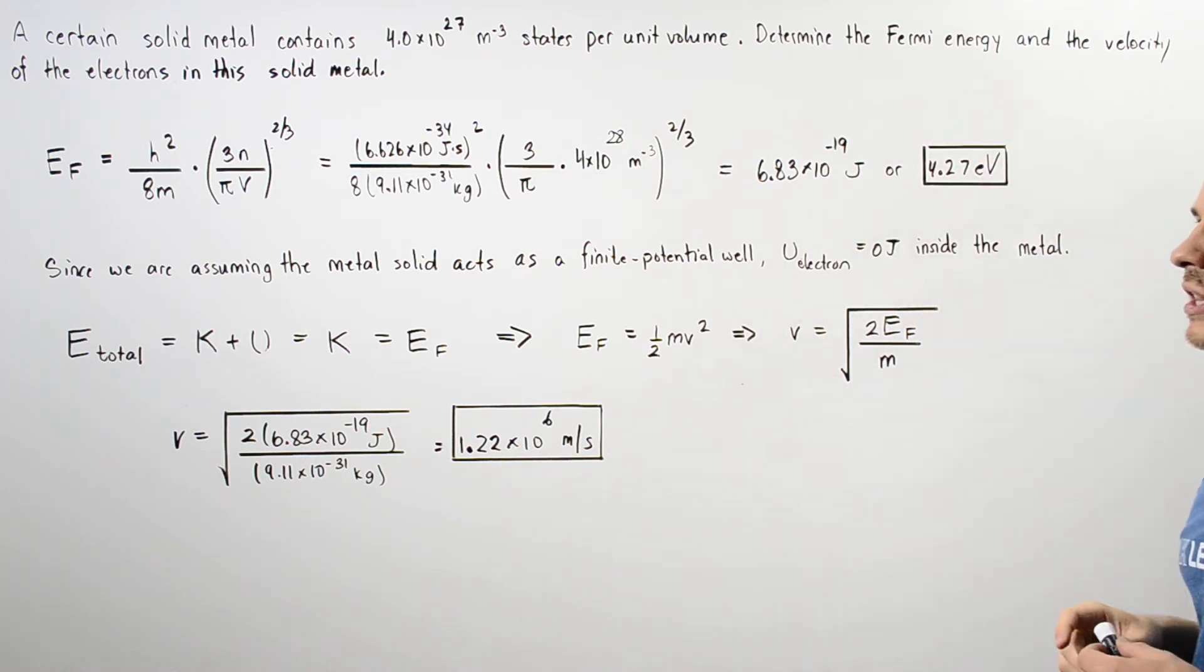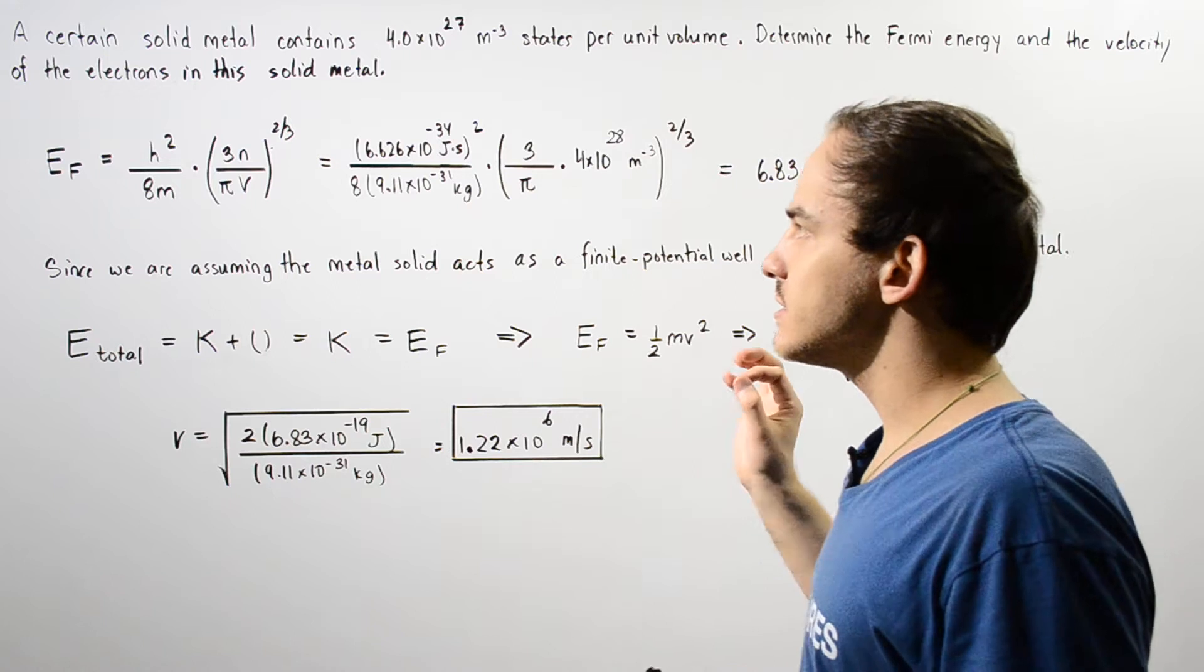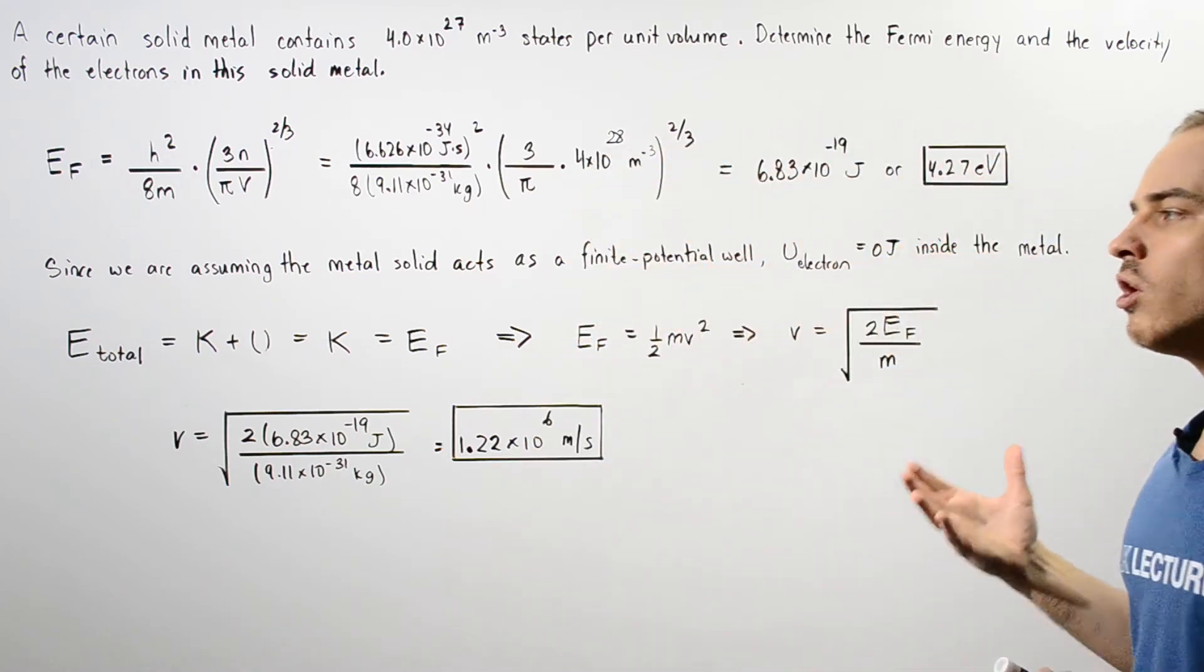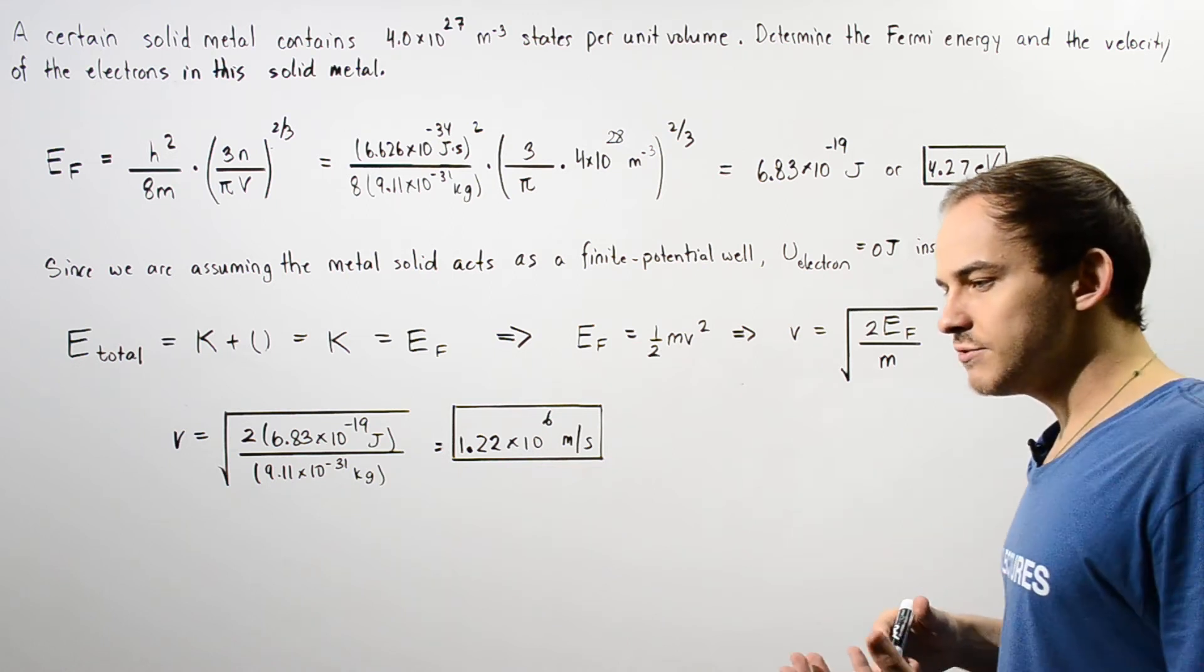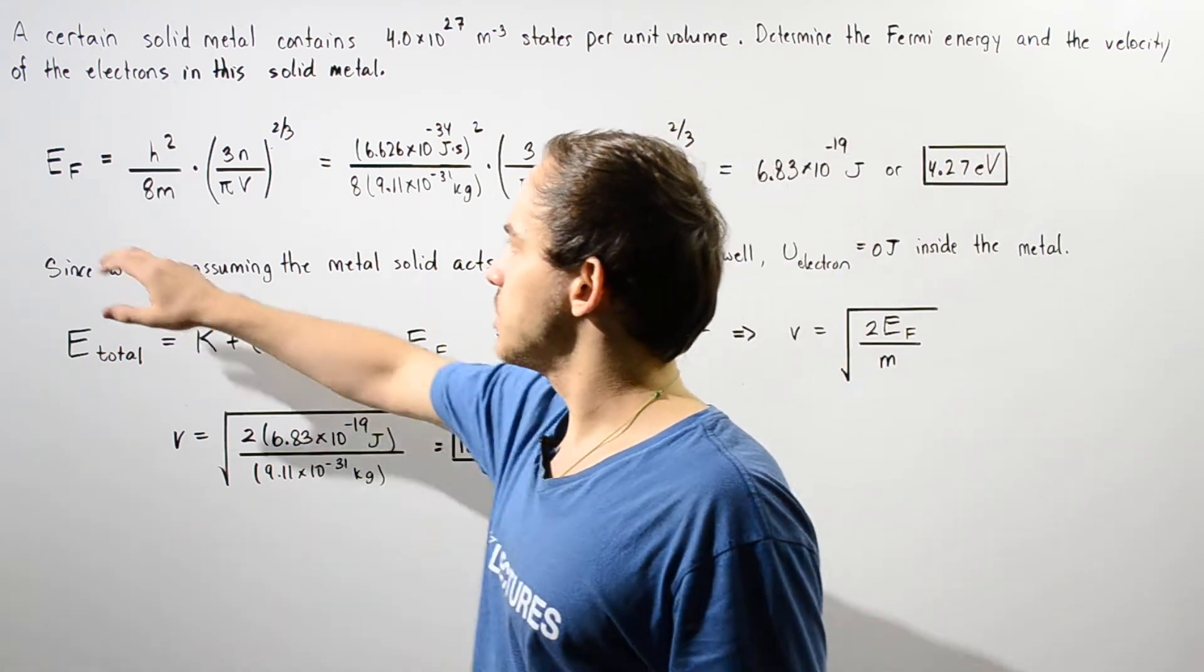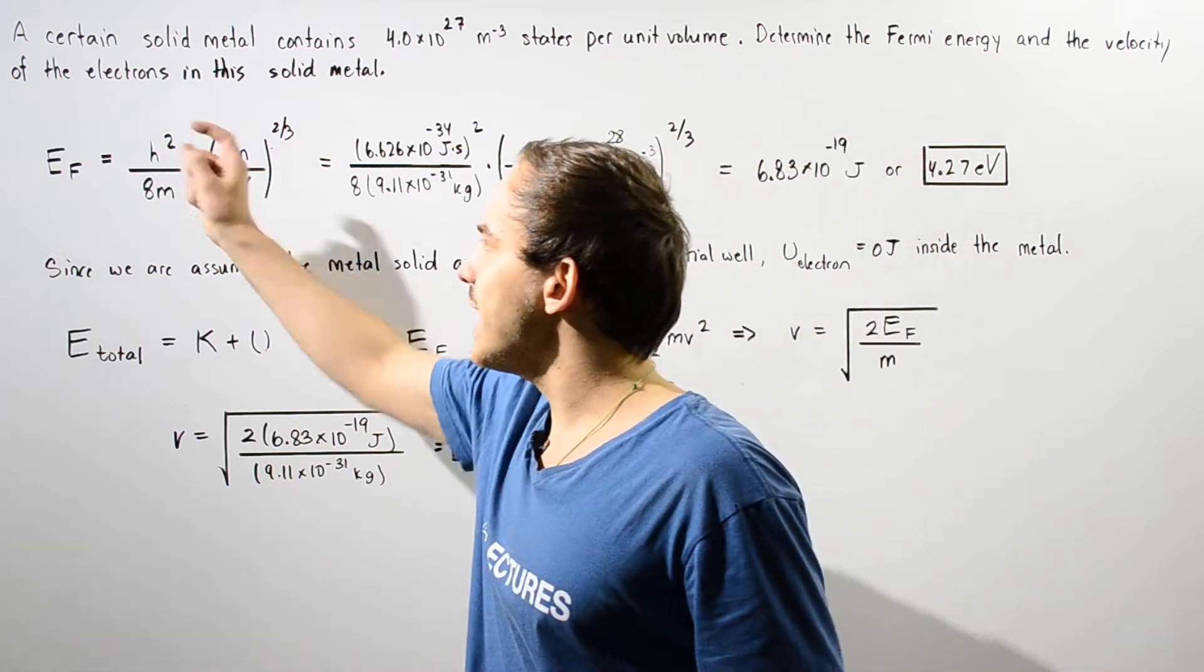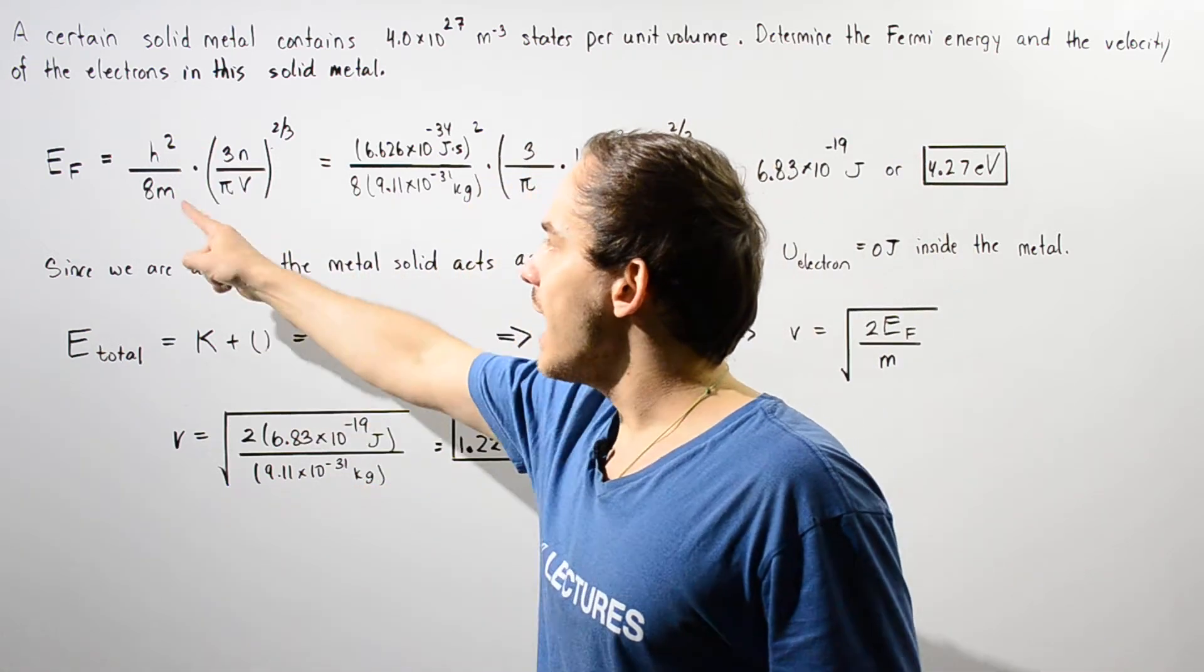To begin, let's recall what the equation is that gives us our Fermi energy. That is given by this equation where h is Planck's constant, m is our mass of that electron in kilograms, pi is our constant, and n divided by v is simply the number of quantum states per unit volume.